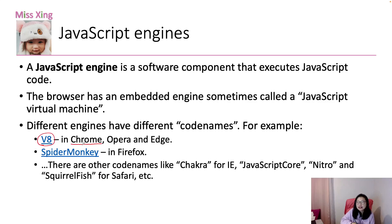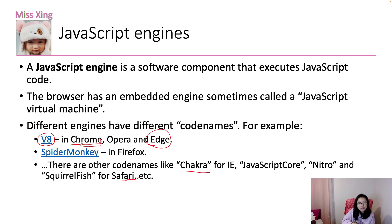Chrome uses the V8 engine, initially created in 2008. Previously, Microsoft IE used Chakra, and nowadays Microsoft Edge also uses V8. Mozilla uses SpiderMonkey. Safari uses Nitro and SquirrelFish. The one I use most is Chrome, and sometimes Firefox. The JavaScript engine names differ across browsers, but they all do the same thing: execute our JavaScript code.